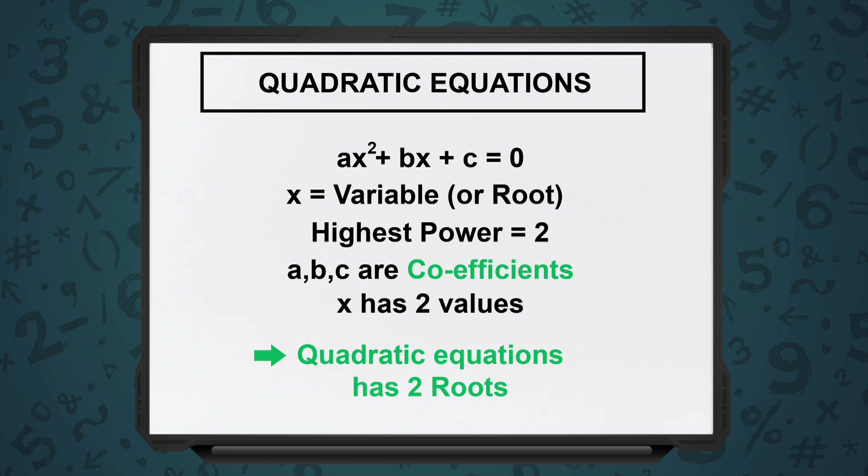x is the variable or the root. A, B and C are coefficients — they could be 0, could be a positive number, could be a negative number, whatever. The standard format is Ax² + Bx + C = 0.